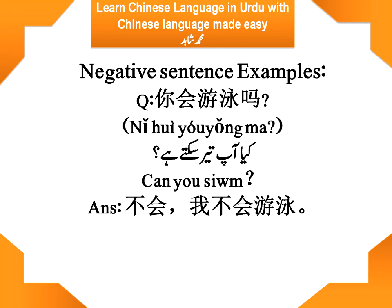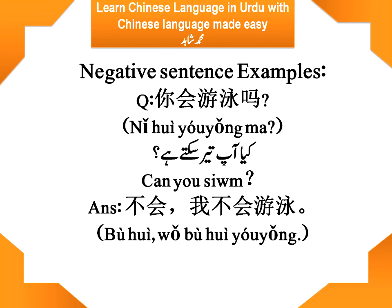不会. 我不会游泳. I can't swim. 不会 — no, I cannot swim. 我不会游泳. I can't swim.